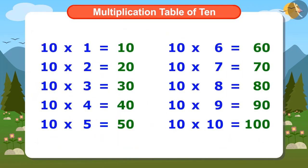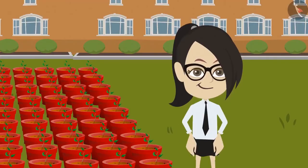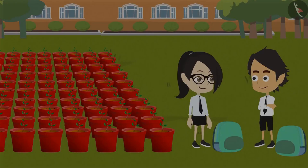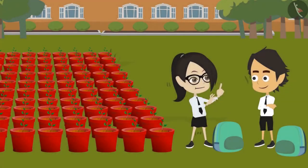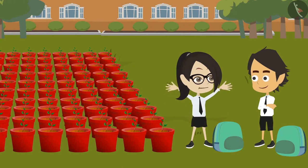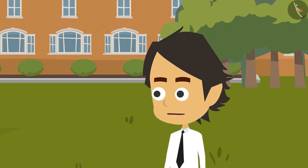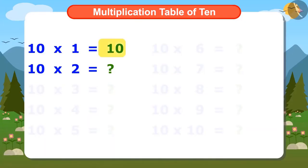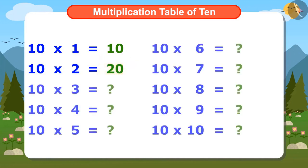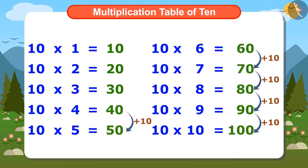Ayushman had written down the entire multiplication table of 10. Vandana knows another easy way to find the multiplication table of 10 and is telling Ayushman about it. If we add 10 to the first number 10 of the multiplication table, we get the second number 20. And so, if we keep adding 10 to the numbers, we can know the entire multiplication table of 10.